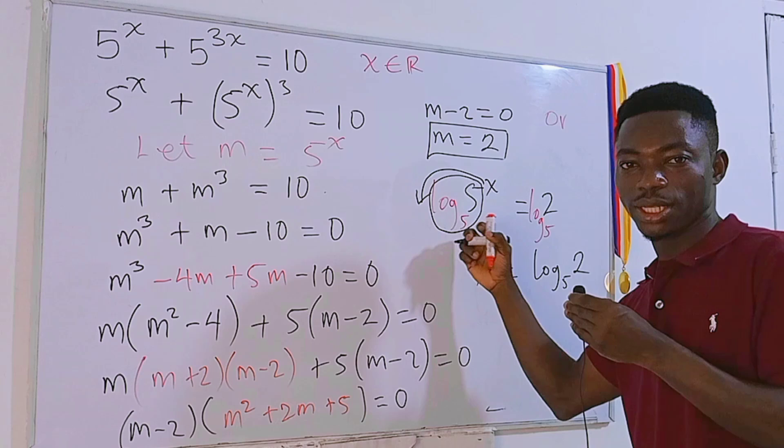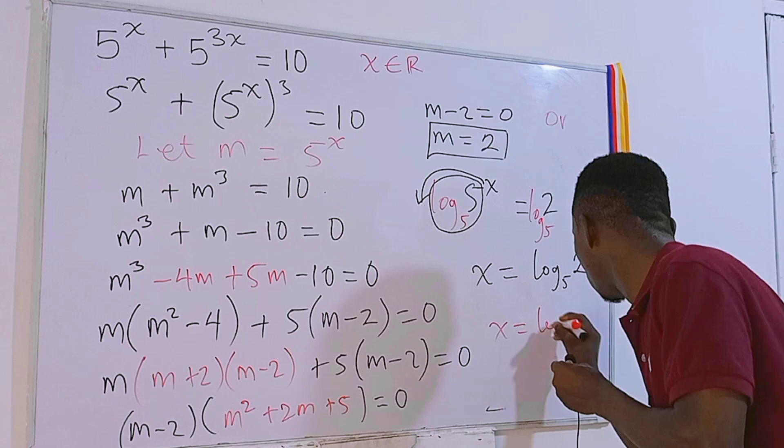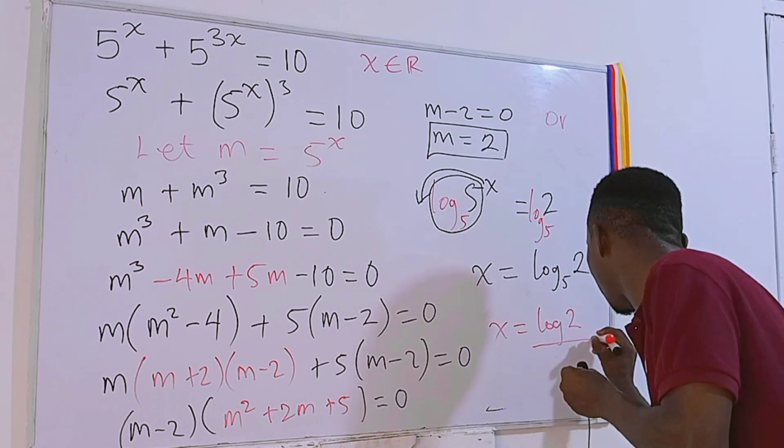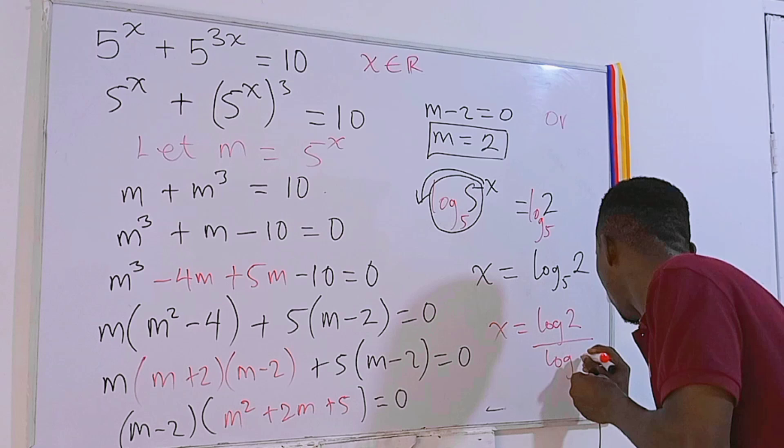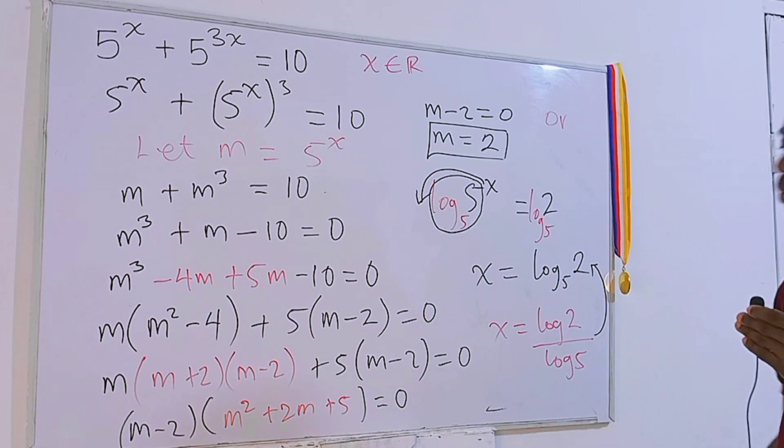Or if you like to take log in base 10 on each side, you'll also be getting something like this: x = log 2 divided by log 5, which is the same as what I got earlier.